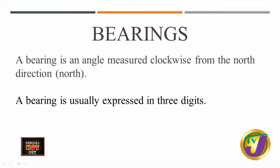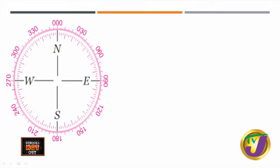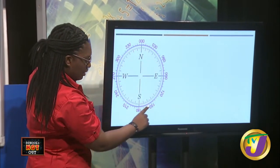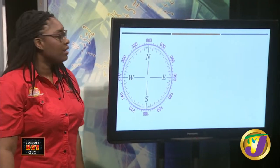Bearings also use three digits. When we start at north, that's represented as 000 degrees — always three digits. Looking at the compass on screen, we can see three-digit figures giving us our bearings. This compass is a tool — not the one used to draw circles in school. It gives measurements and has the four main cardinal points: North, South, East, and West, with three-digit figures on the outside.